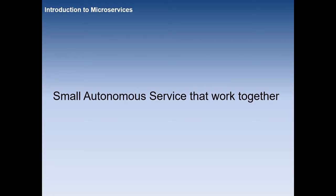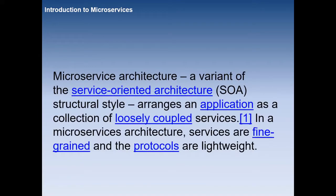The smallest definition you can see: a small autonomous service that works together. There will be different services — maybe one, two, or n number of services — that will combinedly work together. The larger definition: microservices is an architecture, a variant of the service-oriented architecture structural style, arranging an application as a collection of loosely coupled services.